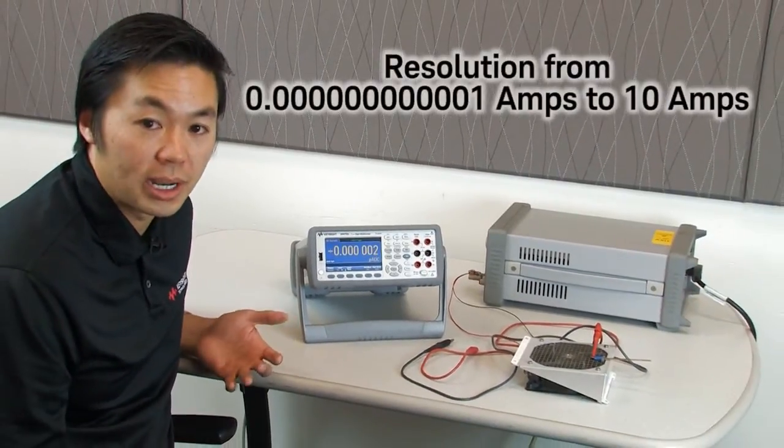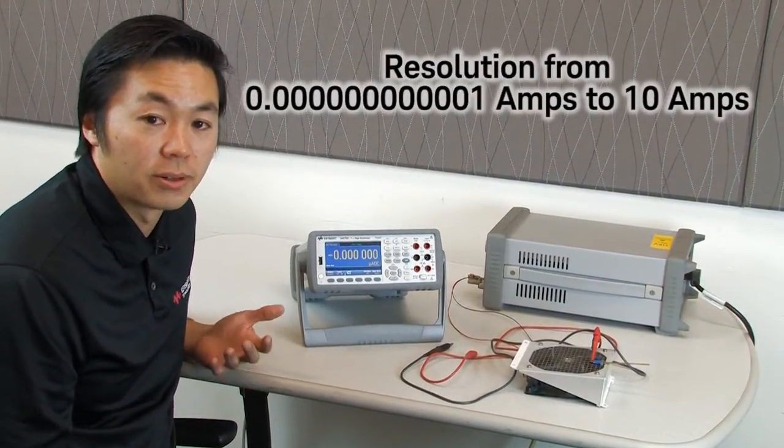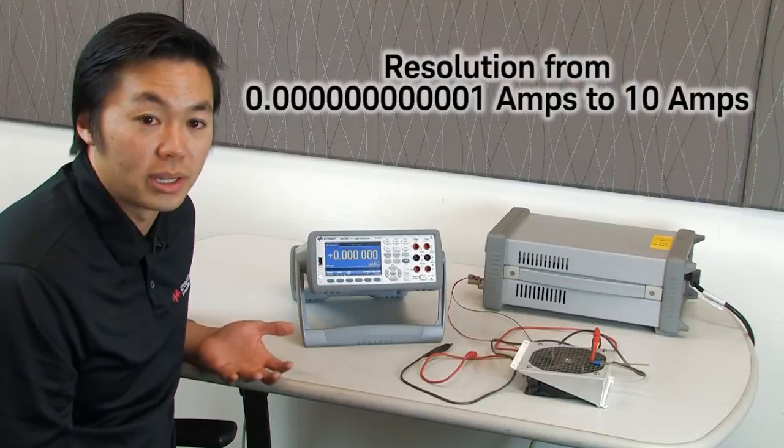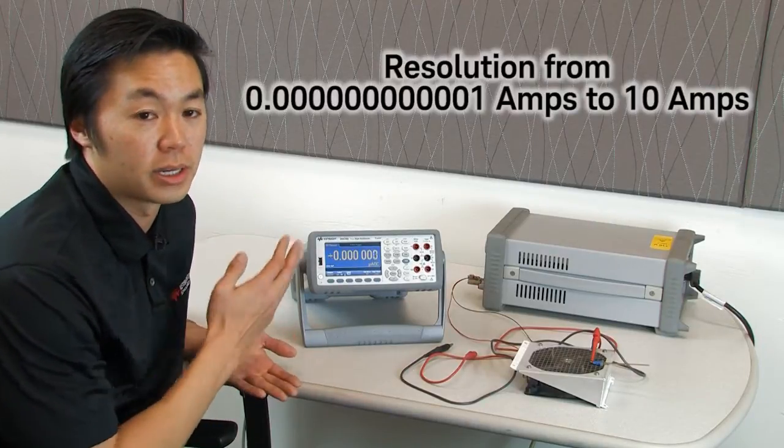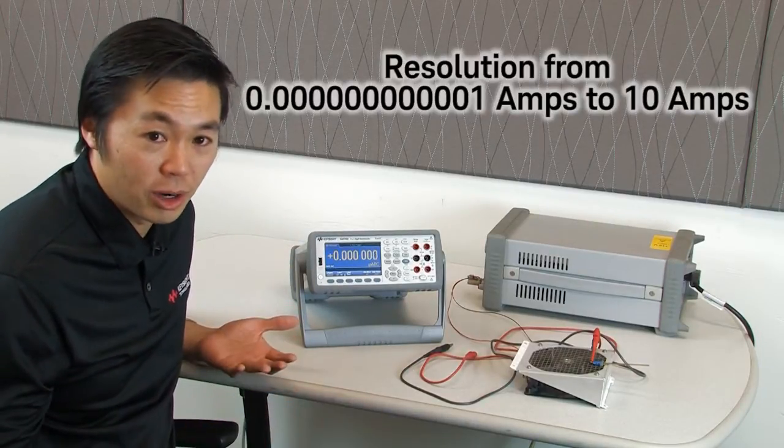This means, for the first time, you can actually get 13 orders of resolution magnitude with a DMM, all the way from 1 picoamp up to 10 amps. Pretty incredible.